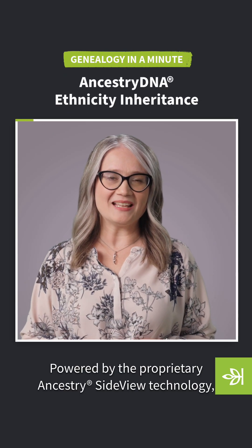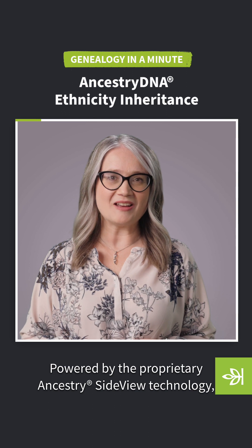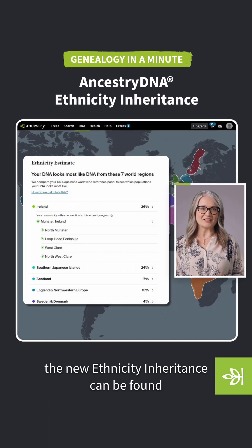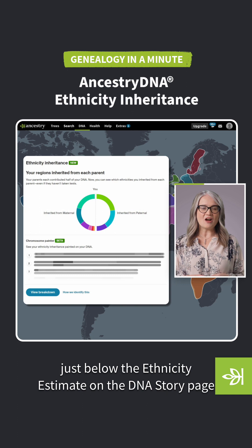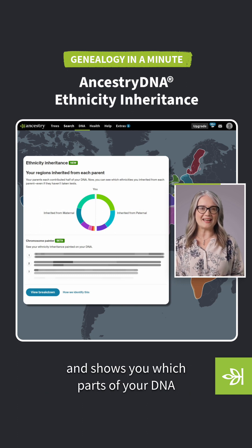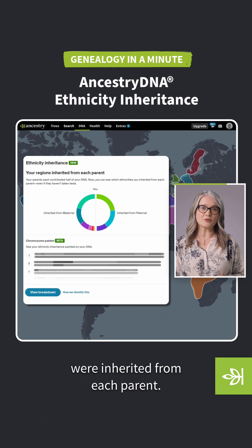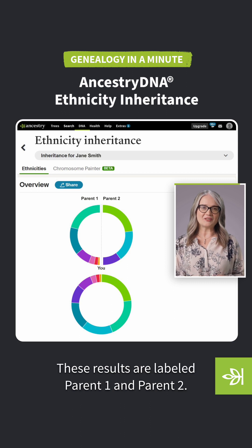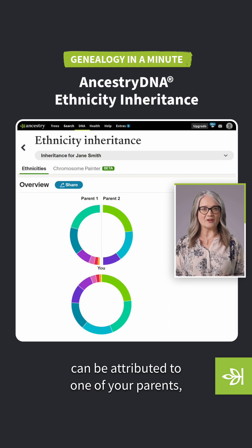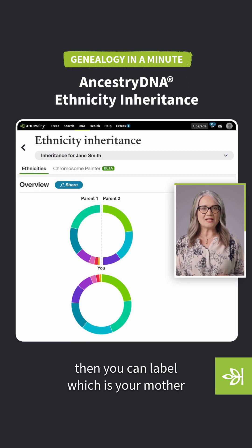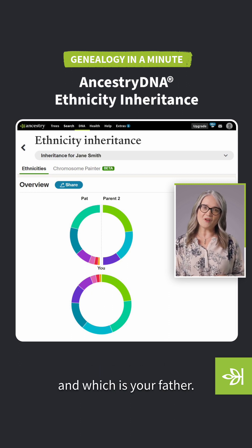Powered by the proprietary Ancestry SideView technology, the new ethnicity inheritance can be found just below the ethnicity estimate on the DNA story page and shows you which parts of your DNA were inherited from each parent. These results are labeled parent one and parent two. If you know that a particular ethnicity can be attributed to one of your parents, then you can label which is your mother and which is your father.